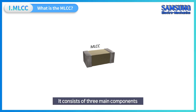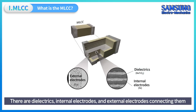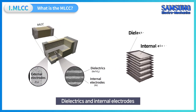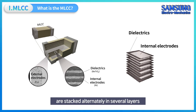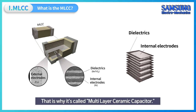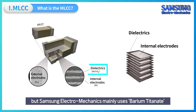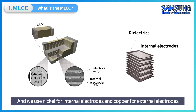It consists of three main components: dielectrics, internal electrodes, and external electrodes connecting them. Dielectrics and internal electrodes are stacked alternately in several layers, which is why it's called a Multilayer Ceramic Capacitor. Samsung Electromechanics mainly uses barium titanate for dielectrics, nickel for internal electrodes, and copper for external electrodes.